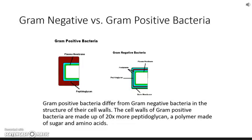On the left, gram positive bacteria have a thick peptidoglycan layer. On the right, gram negative bacteria have a thin, sturdy, durable peptidoglycan layer, and they have two membranes surrounding that layer - it's sandwiched between. In contrast, gram positive's only membrane is on the inside of the peptidoglycan, so peptidoglycan is on the outside. These two cells differ based on the amount of peptidoglycan - that thickness is what determines if it's positive or negative. The next picture also shows thick peptidoglycan on the positive and thin on the negative. Remember: gram negative have two membranes, whereas gram positive only have one.